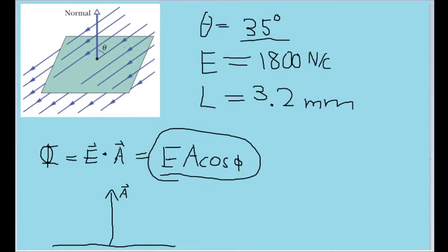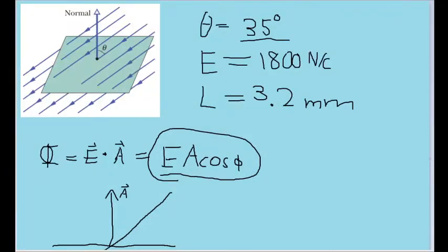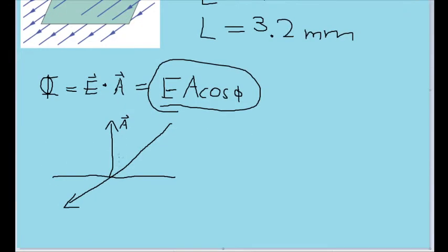Then based on this diagram, the electric field vector will be pointing sort of downwards, like this. Now, the angle theta shown to us in this diagram, the angle that is given to us as 35 degrees, is this angle right here.